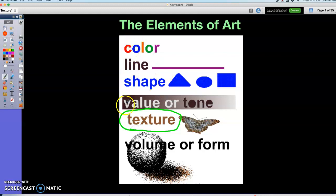As you see here, we have the six elements of art: color, line, shape, value or tone, texture, and volume or form.